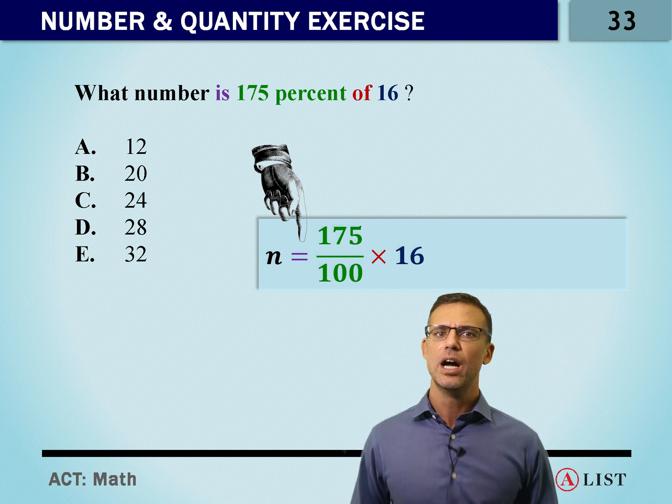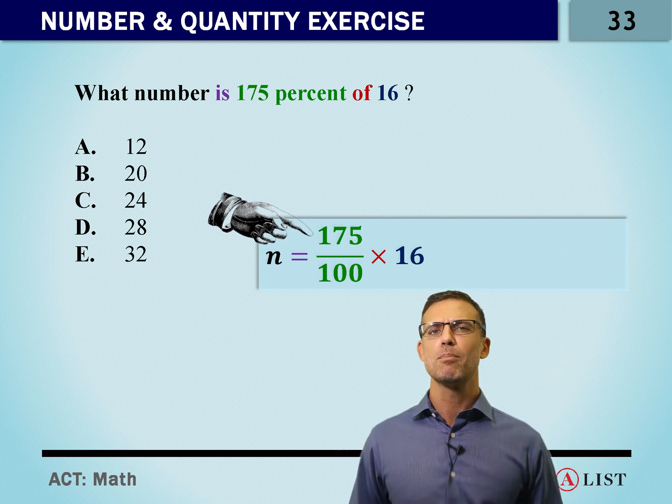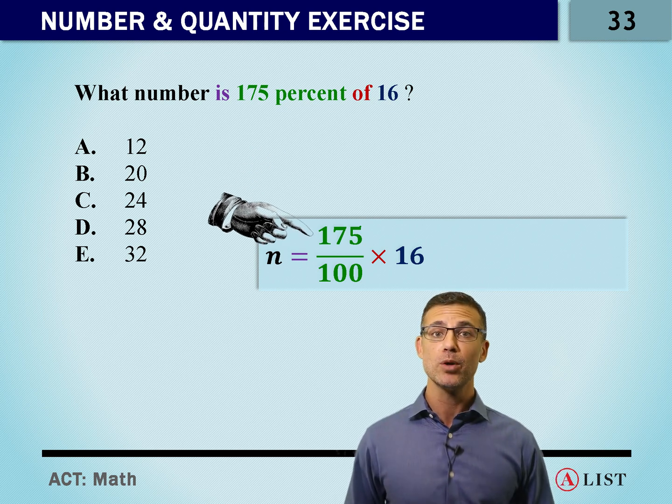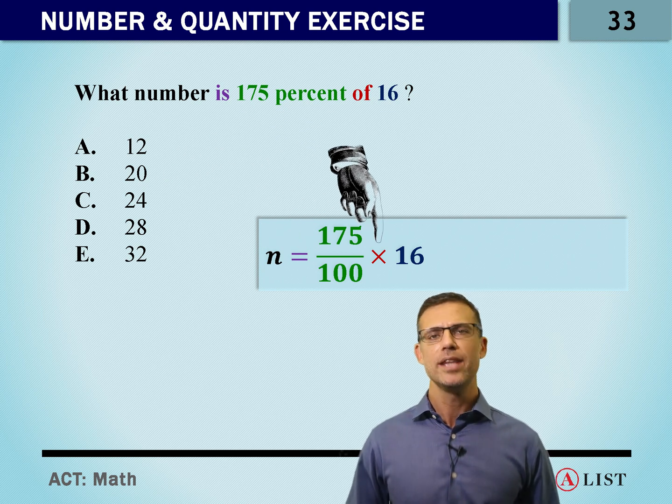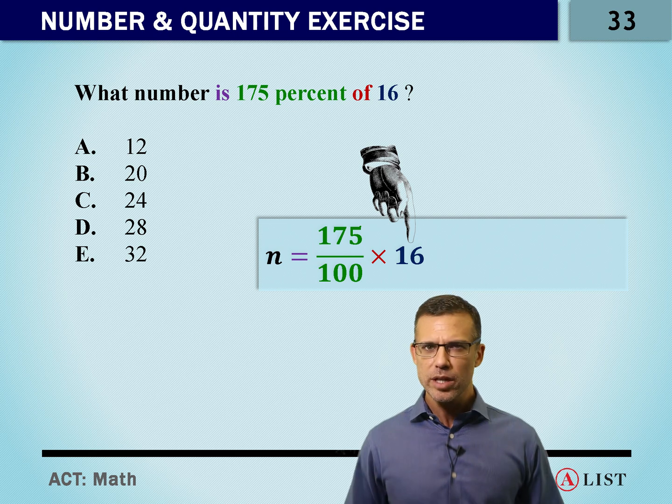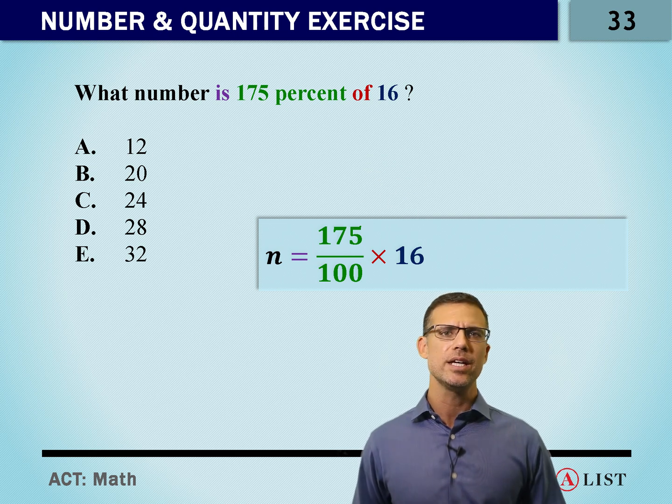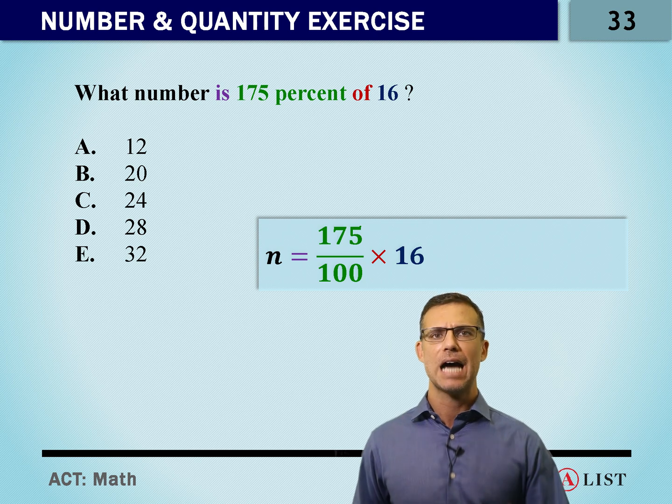So we've got N equals 175%. Remember, percent means divided by 100. Of is times, and then we have the number 16. So the equation that we've got here is N equals 175 divided by 100 times 16.